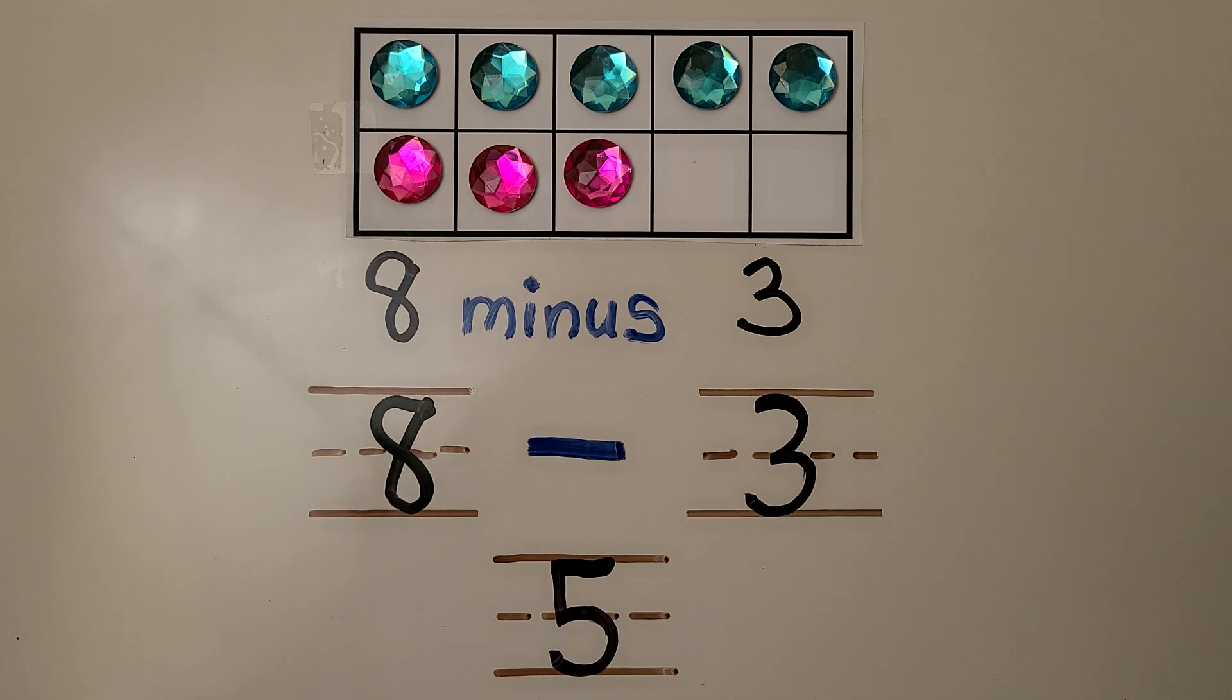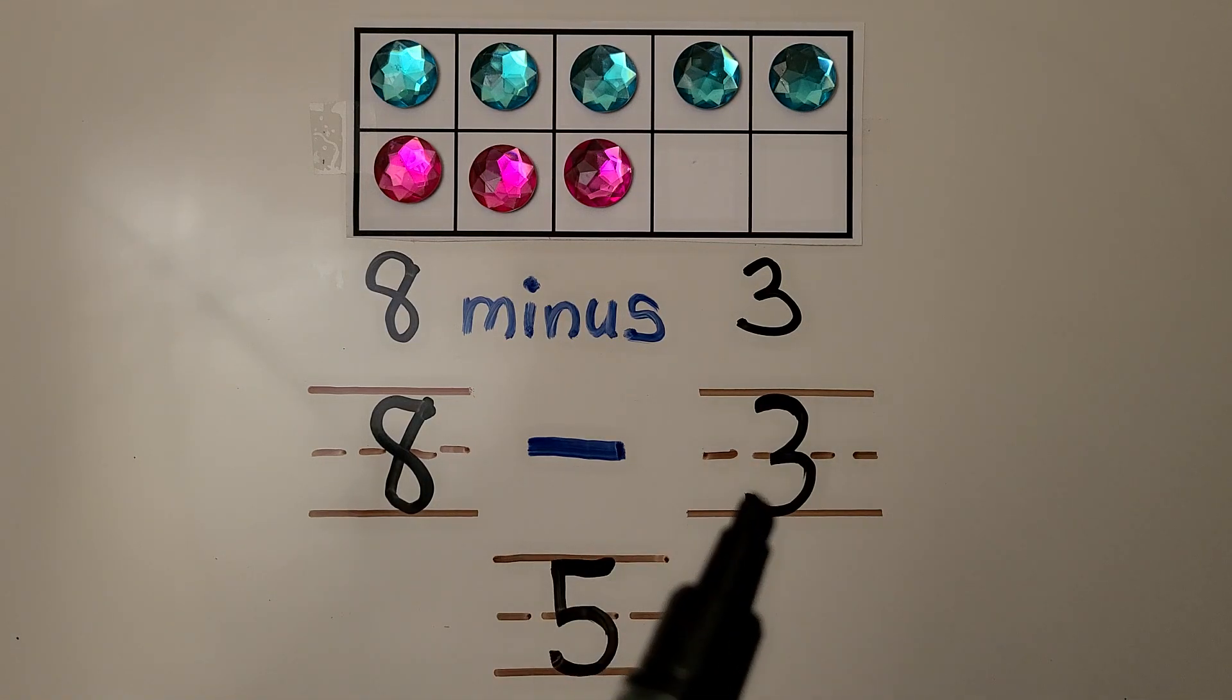Here we have a ten frame with some gems. Meg has eight gems. Three of her gems are pink, the rest are blue. How many of her gems are blue? This is a subtraction problem that can be described as 8 minus 3, or writing 8 minus 3.